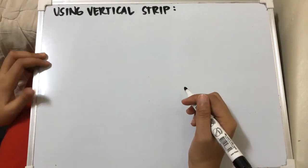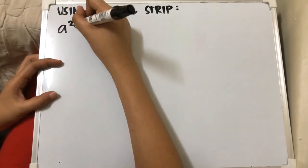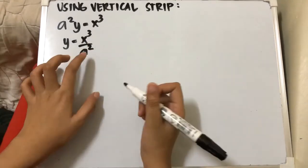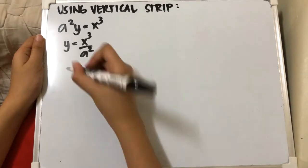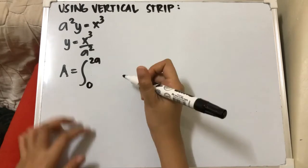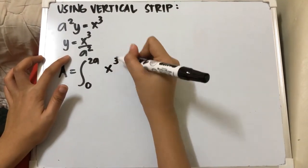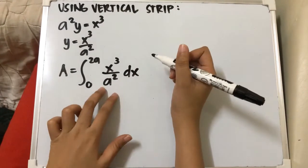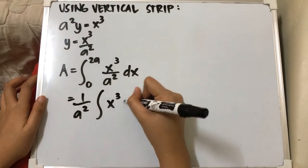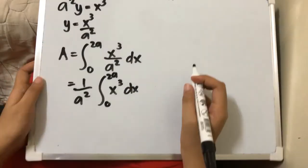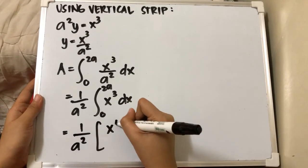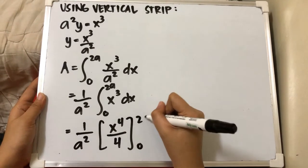Solving using the vertical strip: our function is y = x³/a². The area integral is from 0 to 2a of (x³/a²) dx. Since 1/a² is a constant, we pull it outside the integral, giving us (1/a²) times the integral from 0 to 2a of x³ dx. Integrating x³ gives x⁴/4, evaluated from 0 to 2a.